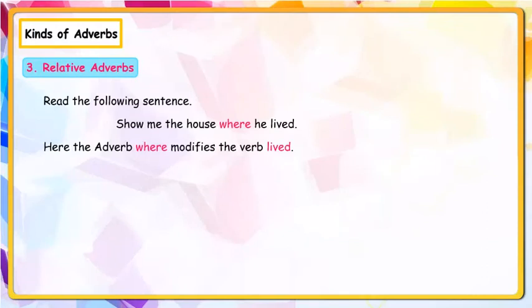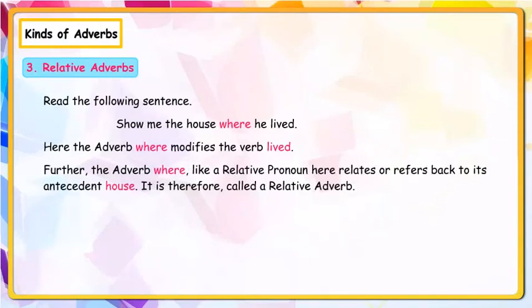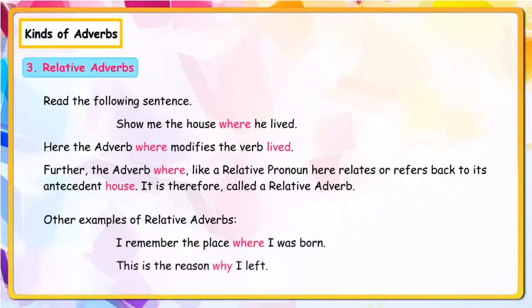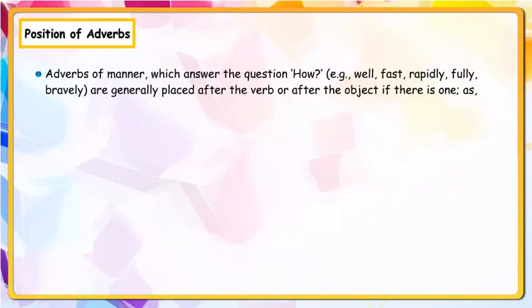Relative adverbs. Read the following sentence: 'Show me the house where he lived.' Here the adverb 'where' modifies the verb 'live'. Further, the adverb 'where', like a relative pronoun, relates or refers back to its antecedent 'house'. It is therefore called a relative adverb. Other examples: I remember the place where I was born; This is the reason why I left.